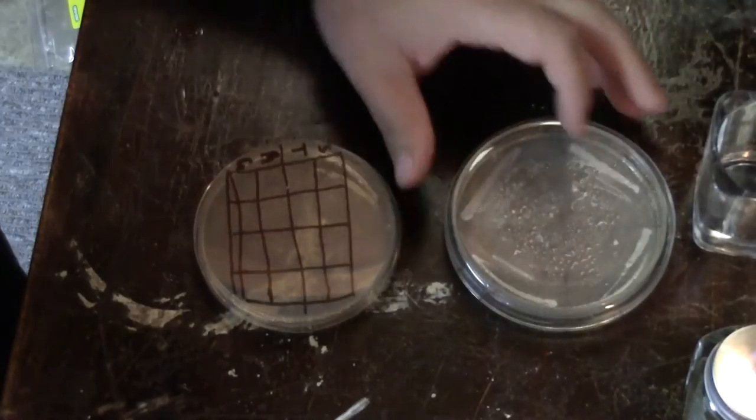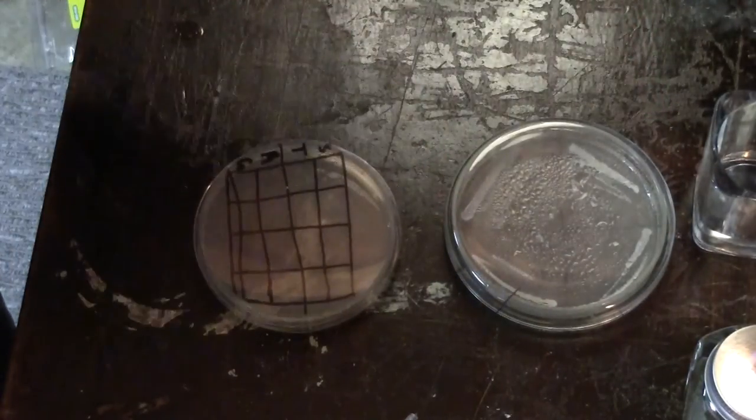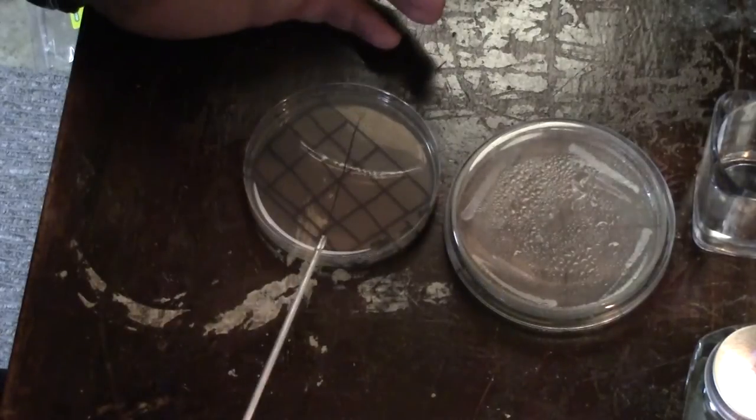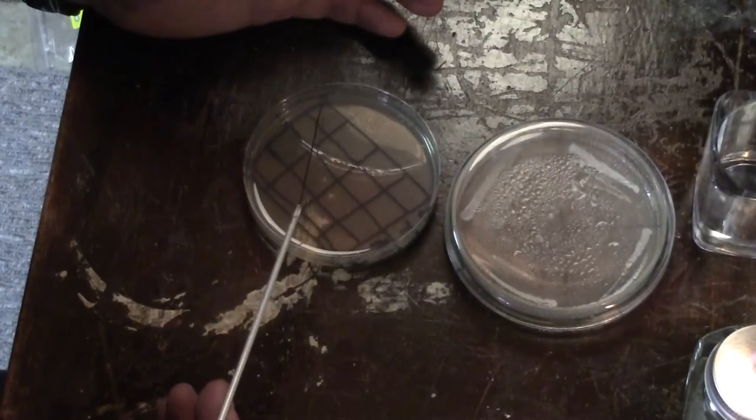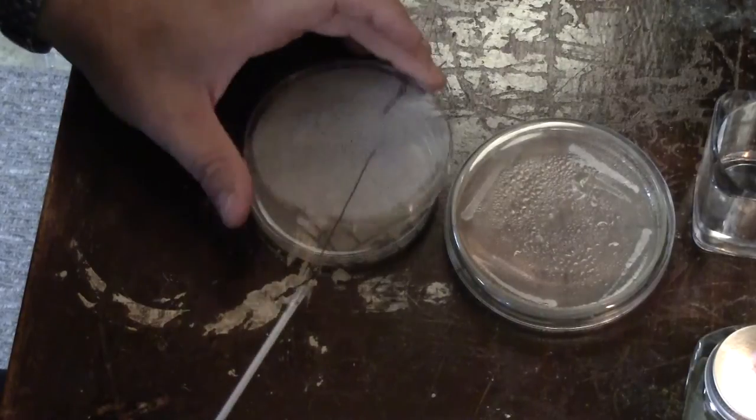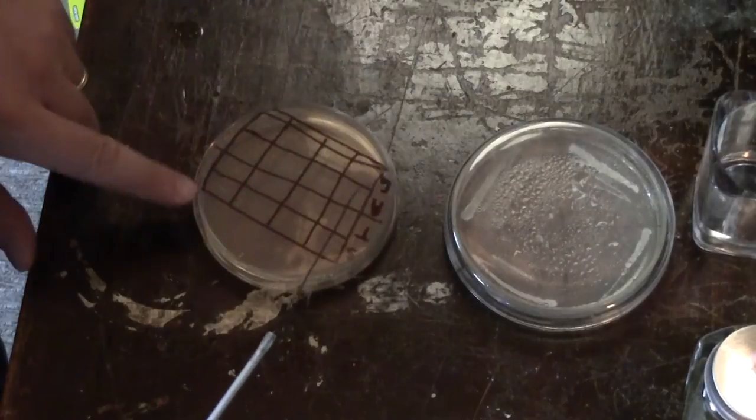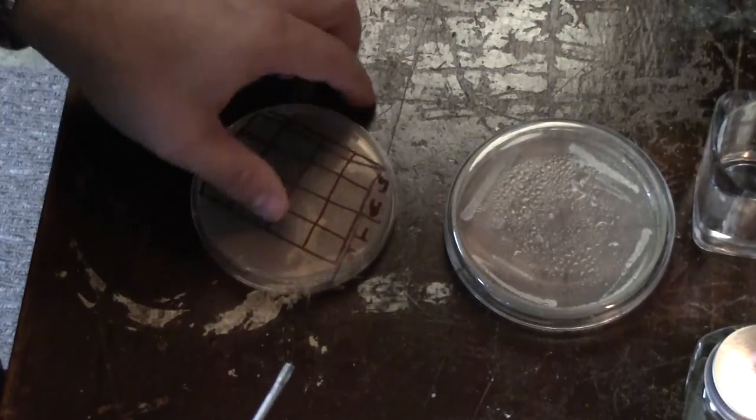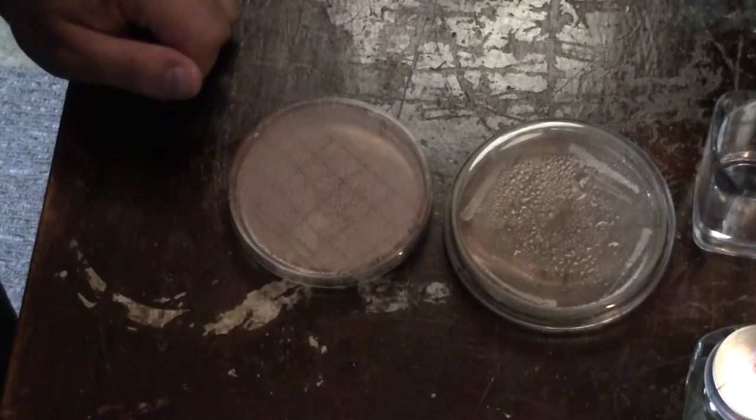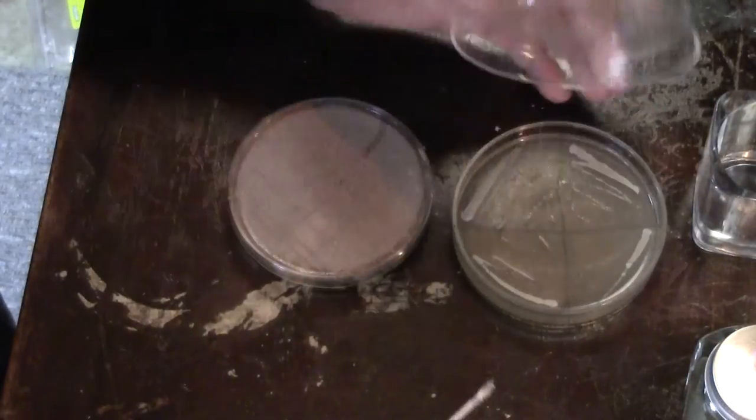So just very carefully pick up the colony and you don't have to get the whole thing. It's enough just to touch the loop to it. Then on the equivalent part in your petri dish, you just want to zigzag gently across that particular quadrant there. So that's one yeast transferred. So we just repeat that until we've captured everything that we want.